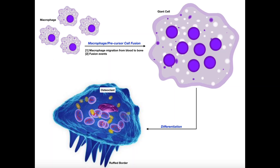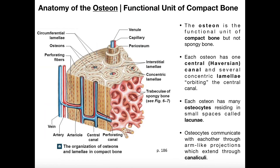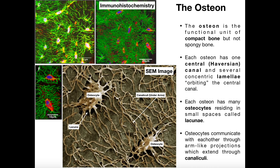In the previous video, we talked extensively about the functions of osteoblasts and osteocytes. We talked about the organization of the osteon, which is the functional unit of compact bone, and we saw how osteoblasts differentiate into osteocytes, which function in maintaining the integrity of the bone tissue. Then we took a look at some electron microscopy images and immunohistochemistry.